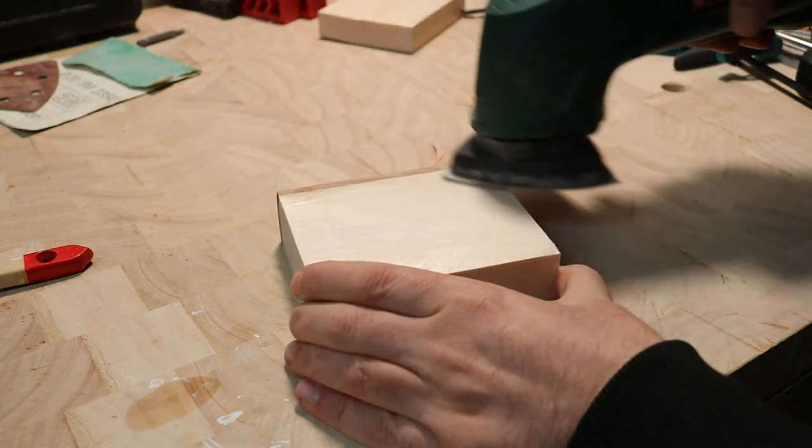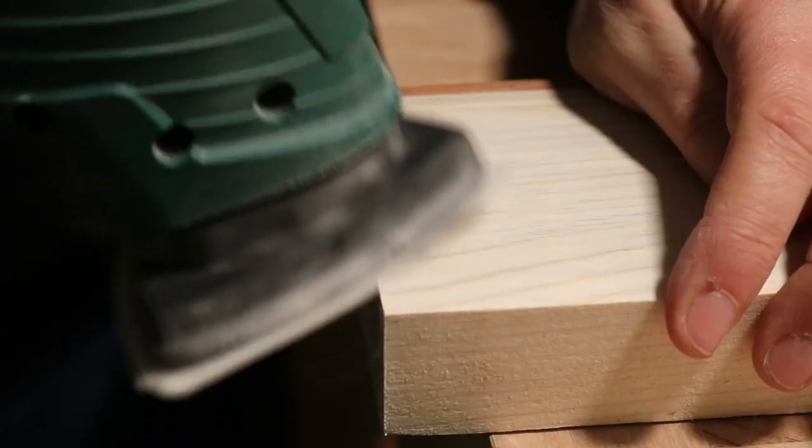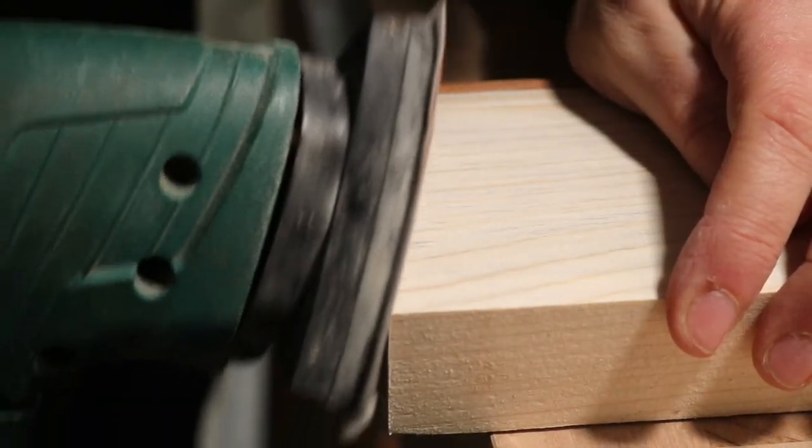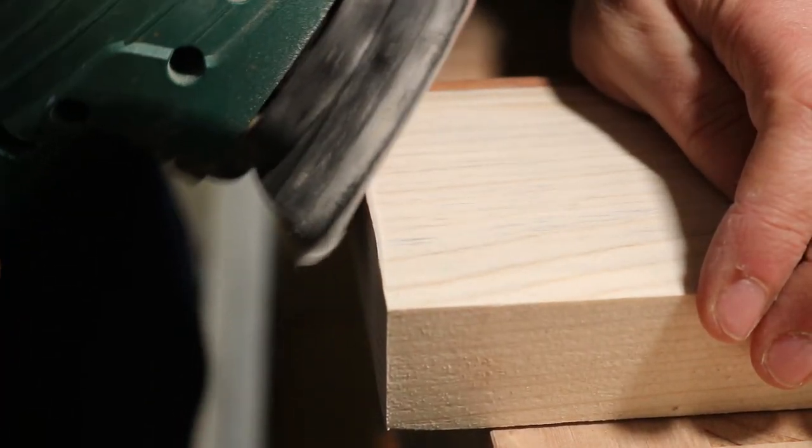I gave the wood a good sanding with 120, 240 and 400 grit sanding discs and rounded the corners a bit for a nice grip. And last but not least a finish with a bit of tung oil.